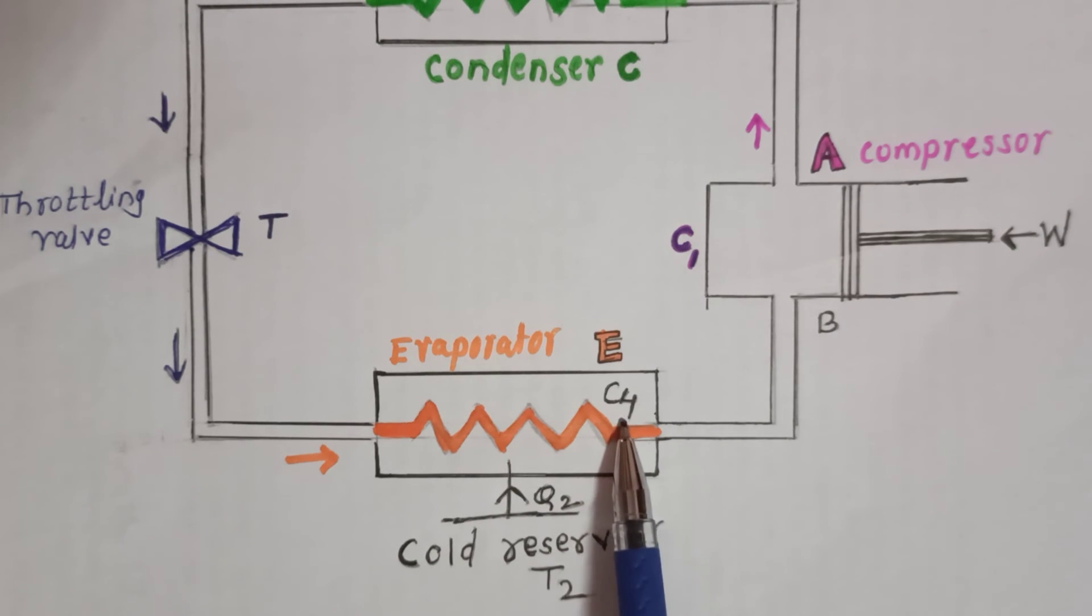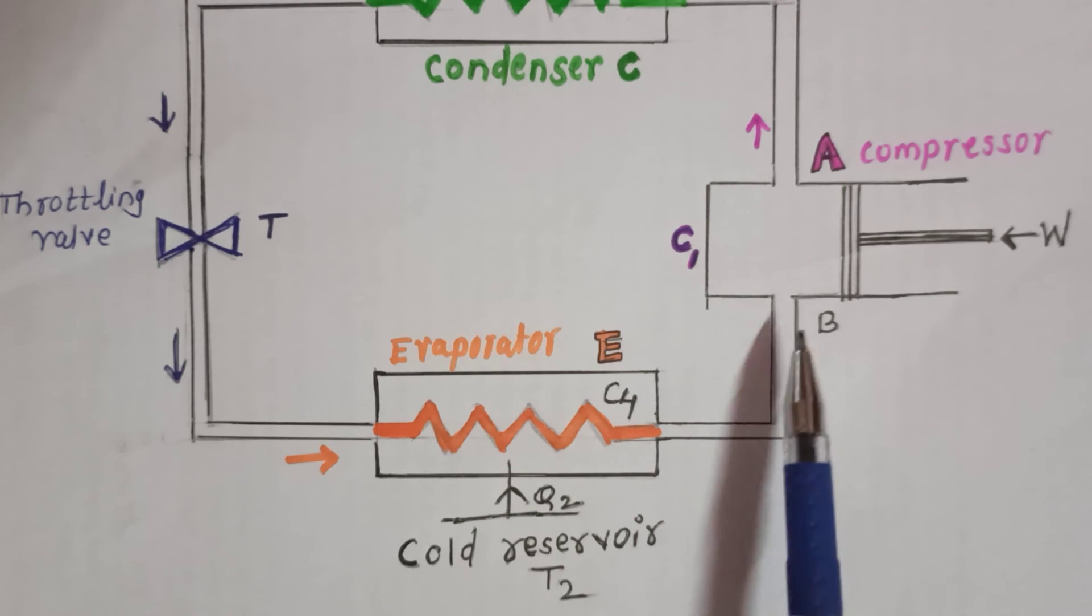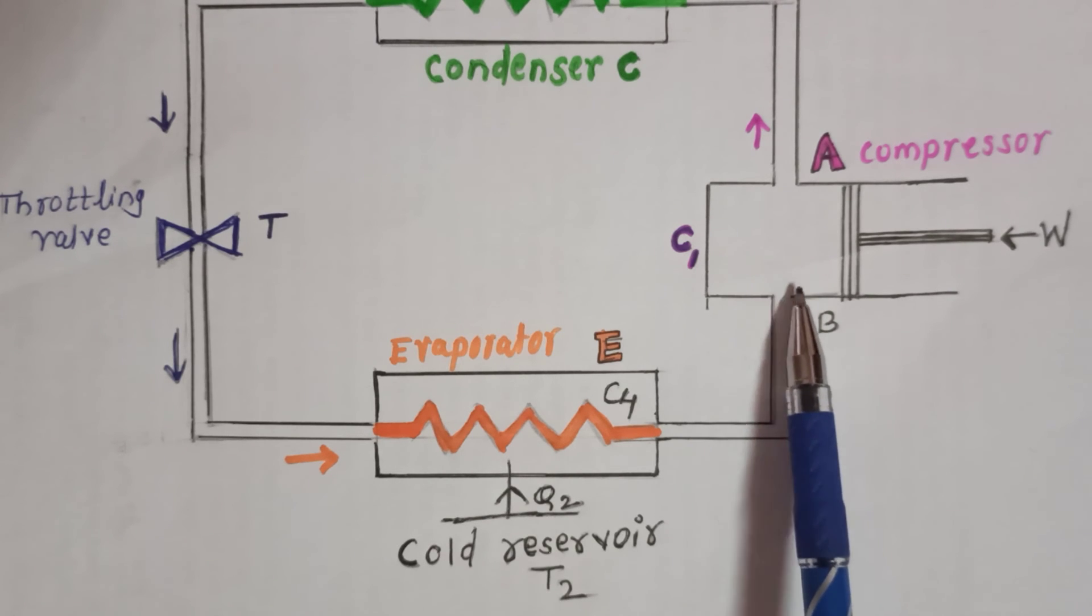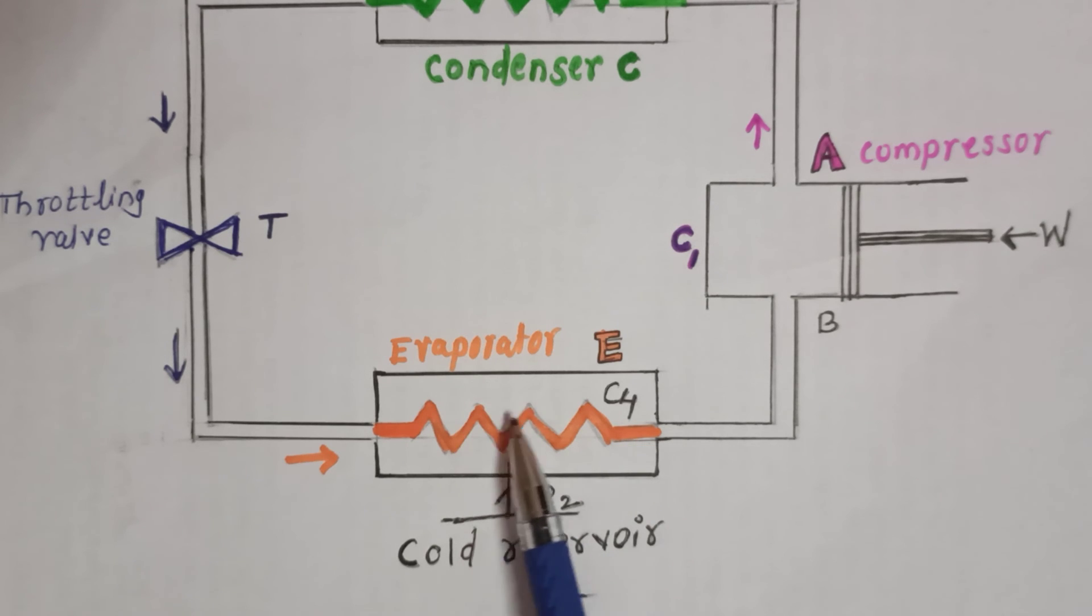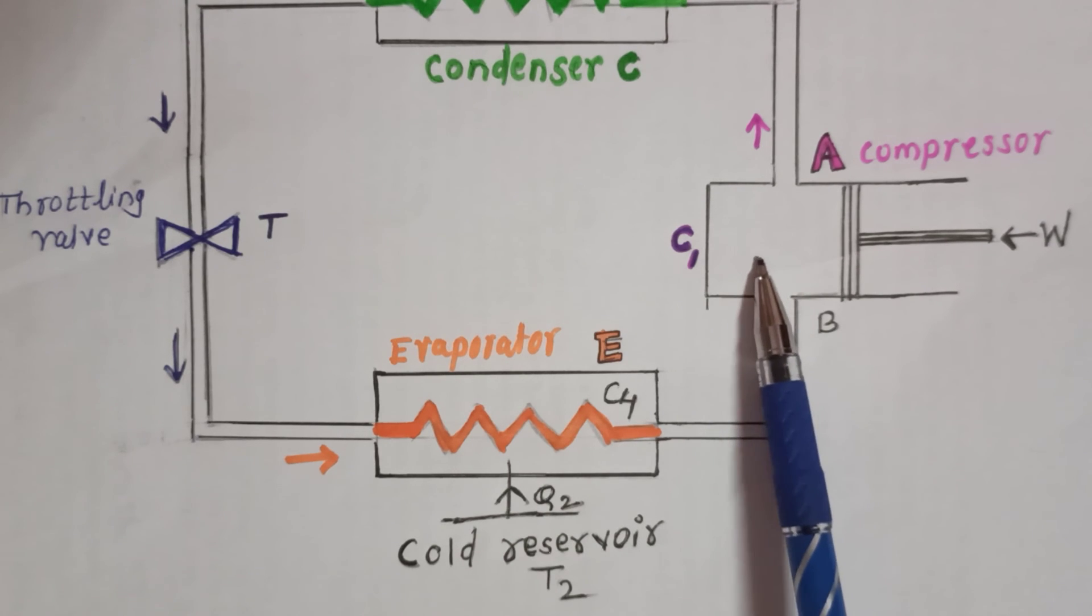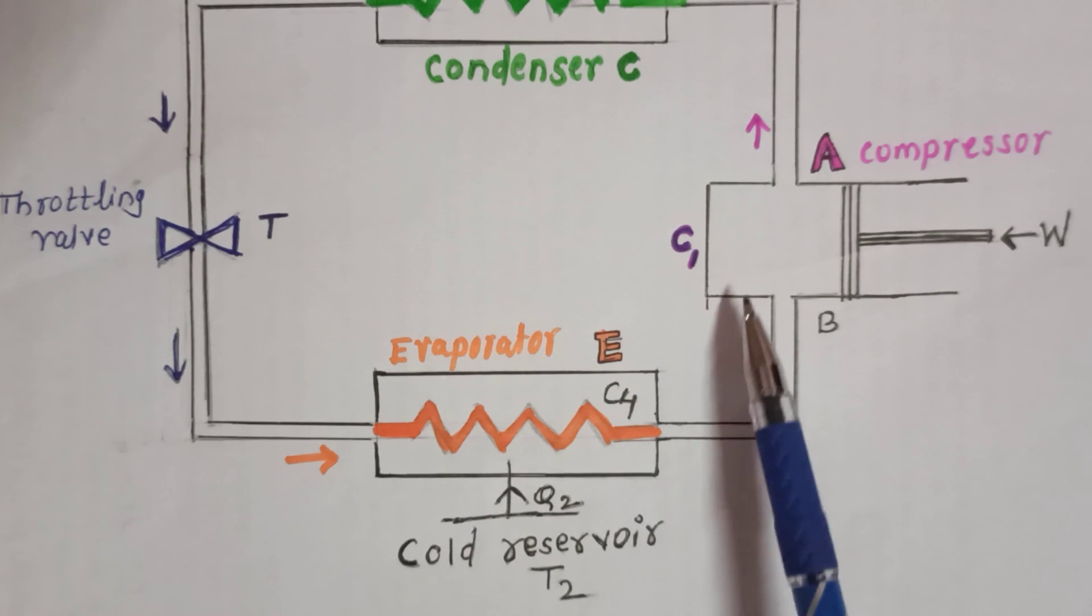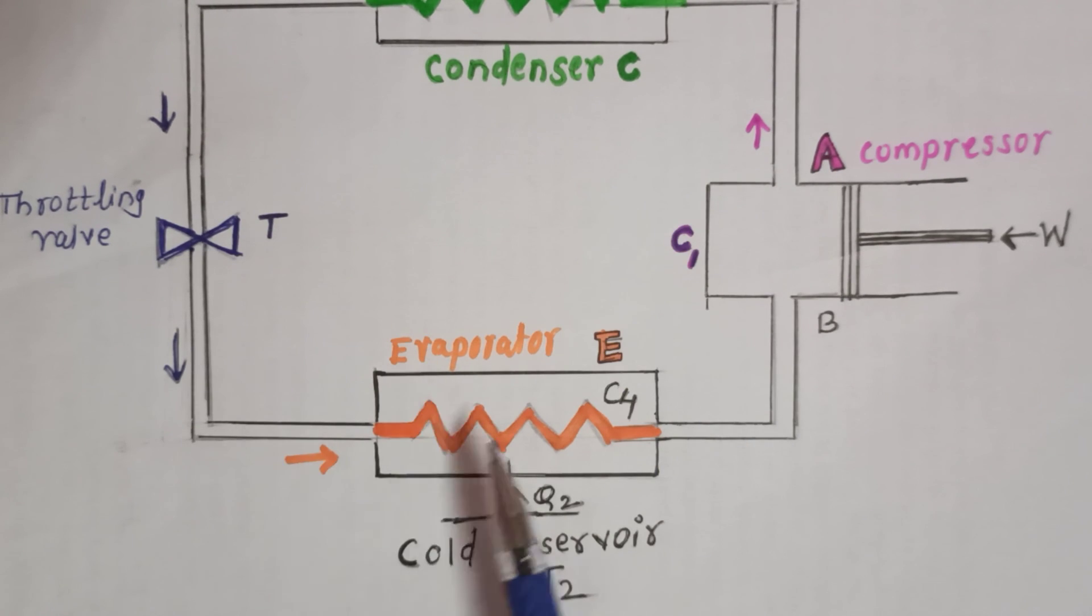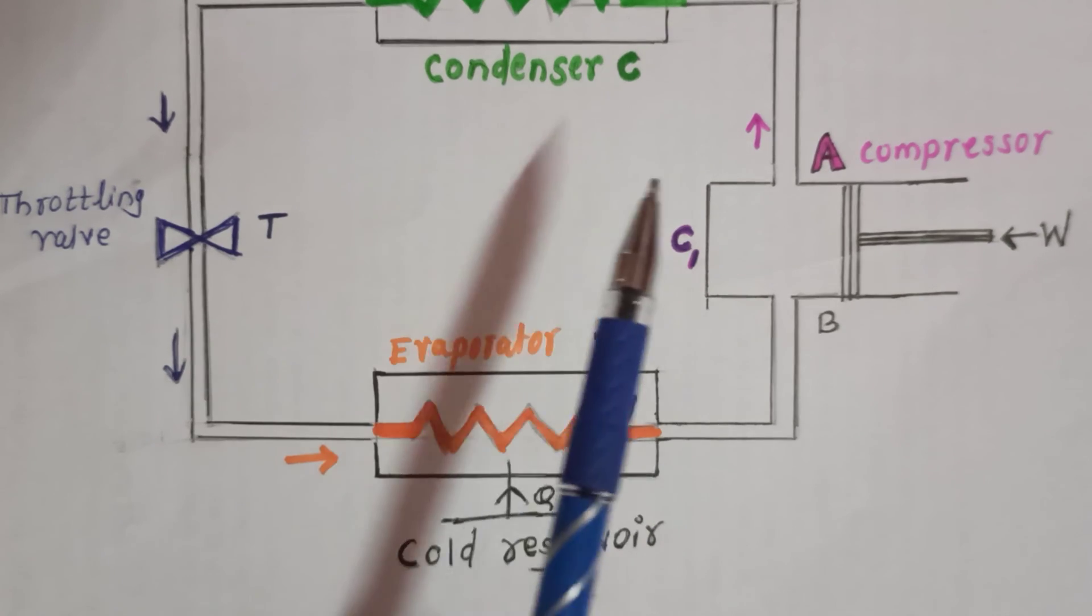These vapors at low pressure again enter into the compressor through valve B. These low temperature cooled vapors enter inside the compressor, that is inside the fridge. In this way the cyclic process is completed. In evaporator, the coil C4 is in ice compartment of the refrigerator where it directly cools the refrigerant. In this way the vapor compression refrigerator works.